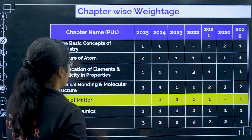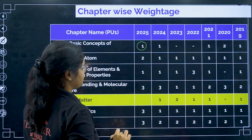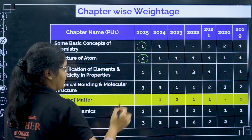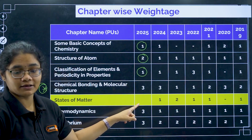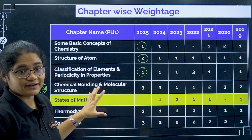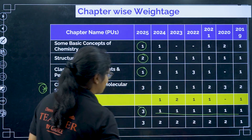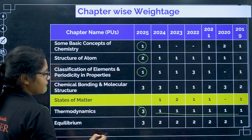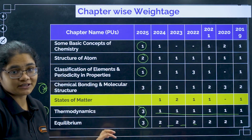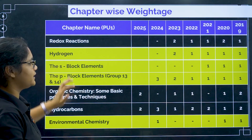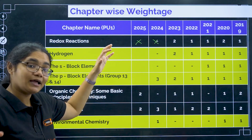Coming to PU1 chapter-wise data: in 2025, some basic concepts of chemistry had one question; structure of atom had two questions; classification of elements had one question; chemical bonding had three questions — this is a high weightage topic consistently. Thermodynamics used to get one question every year, but in 2025 we got three questions. Equilibrium used to get two questions every year, but in 2025 we got three questions. Redox reaction had no question in 2025 or 2024 — so this is a less weightage chapter and you can skip it for the end.